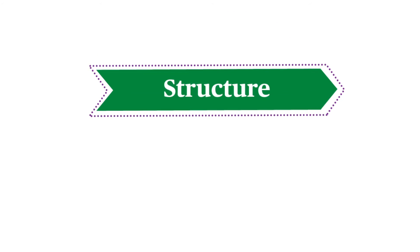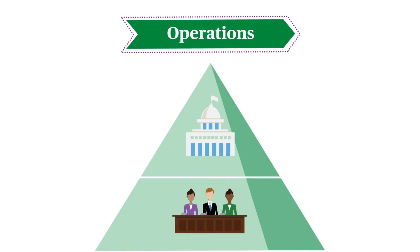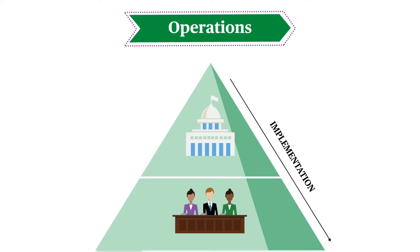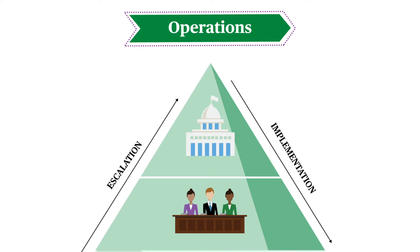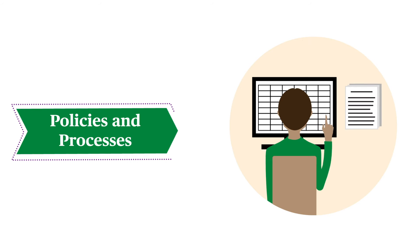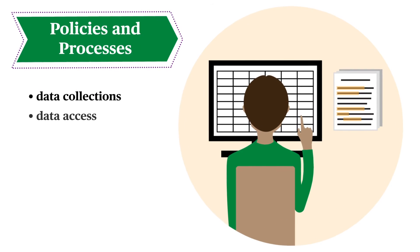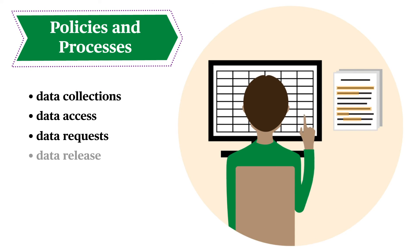The third component is data governance operations, which define how data governance work will be executed. Operations include each data governance group's decision-making process and how they escalate and resolve issues. Lastly, policies and processes describe how to manage data purposefully and consistently. They often cover topics like data collections, data access, data requests, and data release.